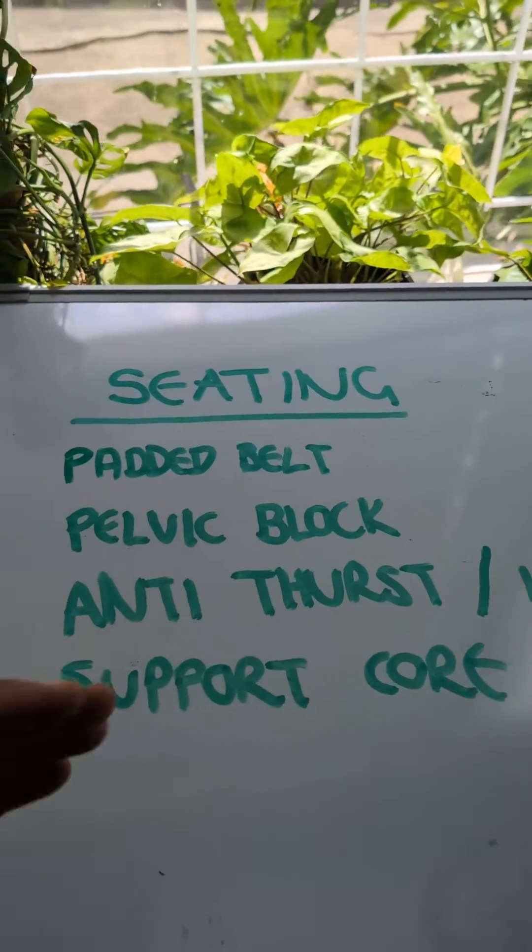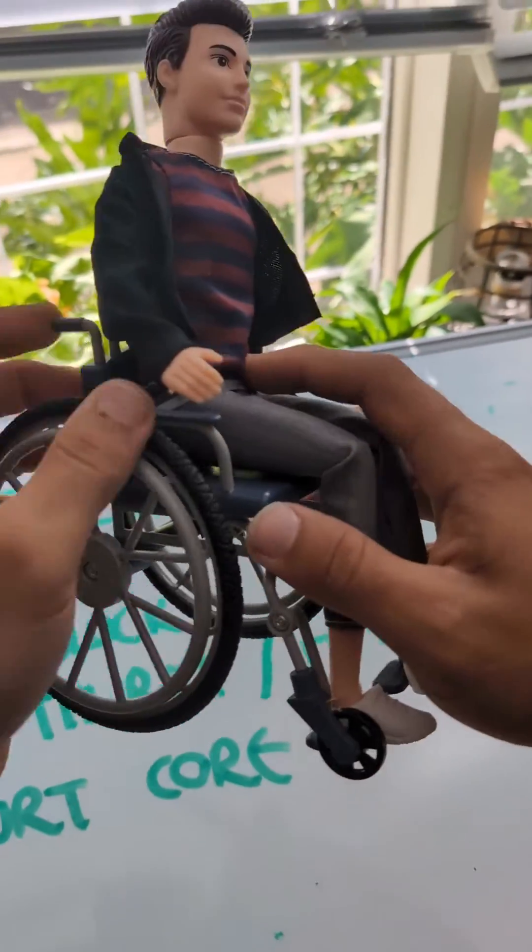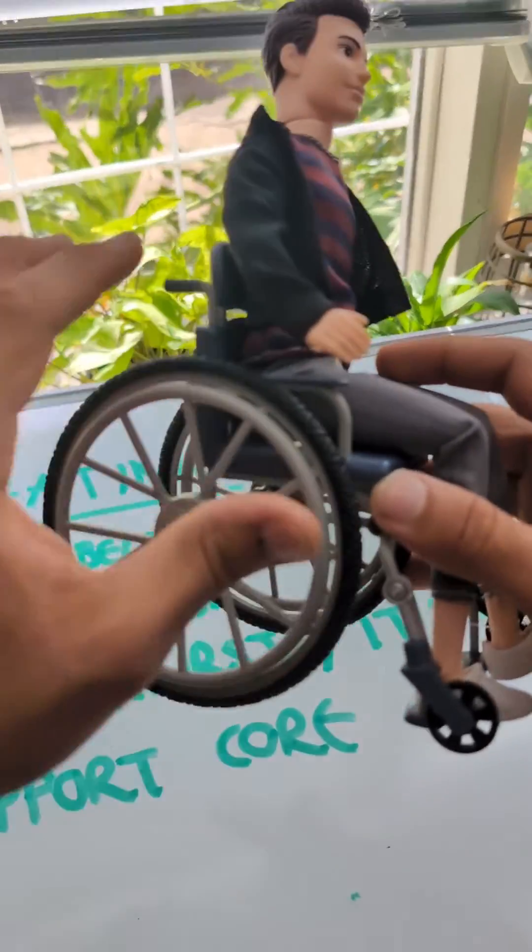Okay, so once you've done the setup, then you want to look at the seating. You want to make sure you've got a padded belt. You want to make sure it's padded because you need it to be nice and snug. You want to make sure it's angled between 60 or 90 degrees, depending on if you're using a two-point belt or a four-point belt.